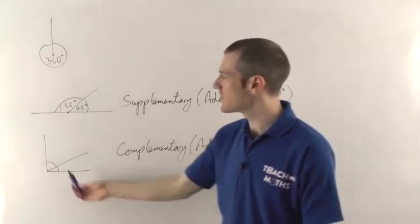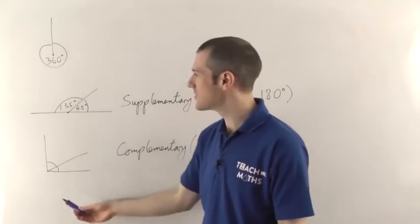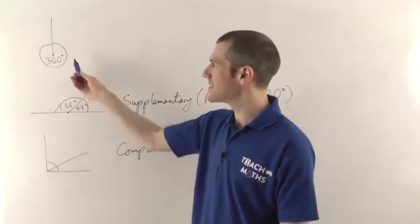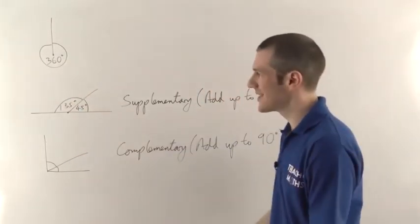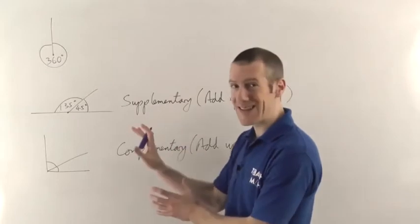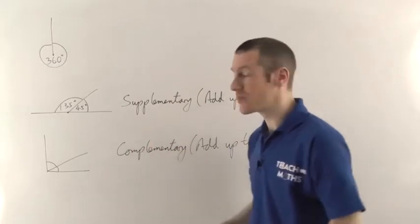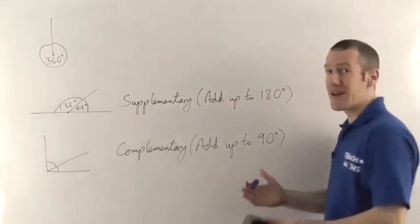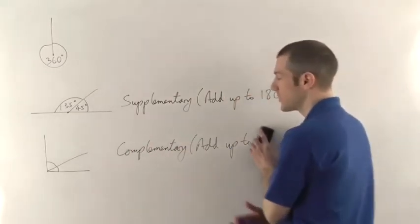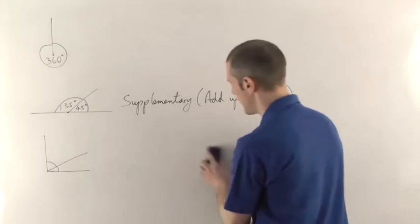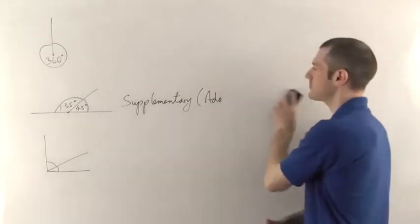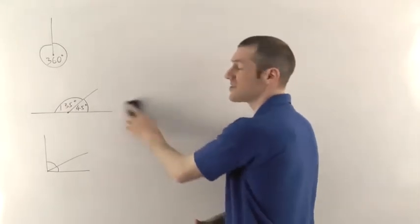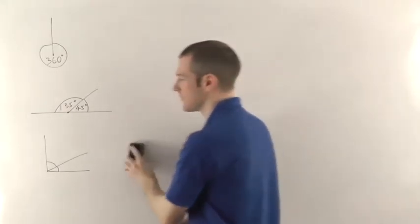A right angle is 90 degrees, an angle on a straight line is 180 degrees, and a full circle is 360 degrees. Those are the basic facts you should be aware of. Next up, we're going to be using some of these facts in various different situations, and the first situation is fairly straightforward.